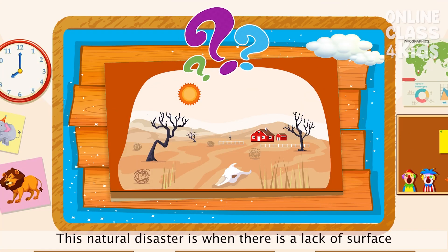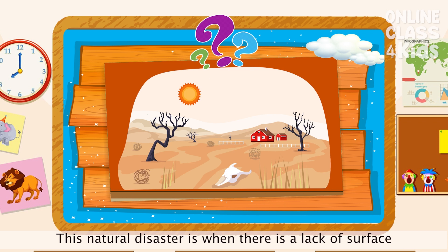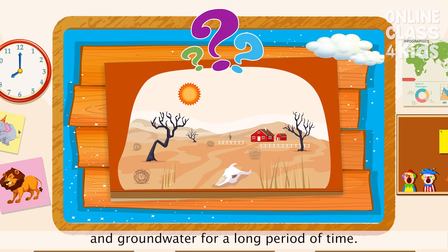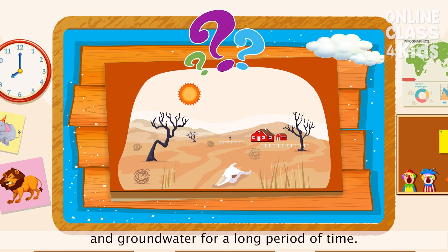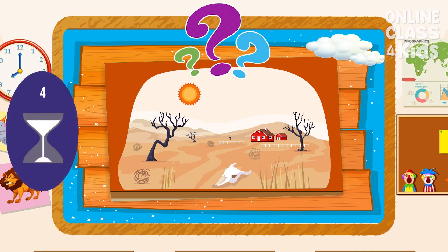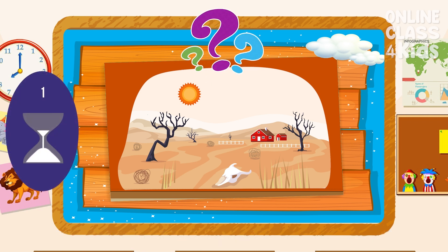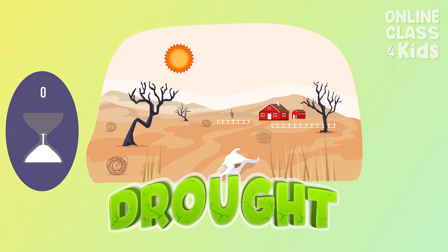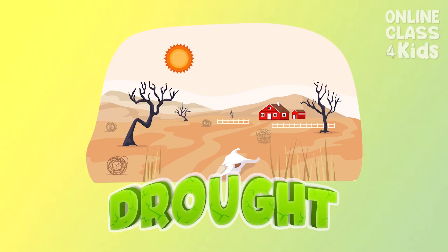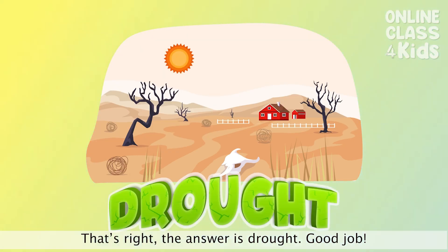This natural disaster is when there is a lack of surface and groundwater for a long period of time. That's right! The answer is drought. Excellent job!